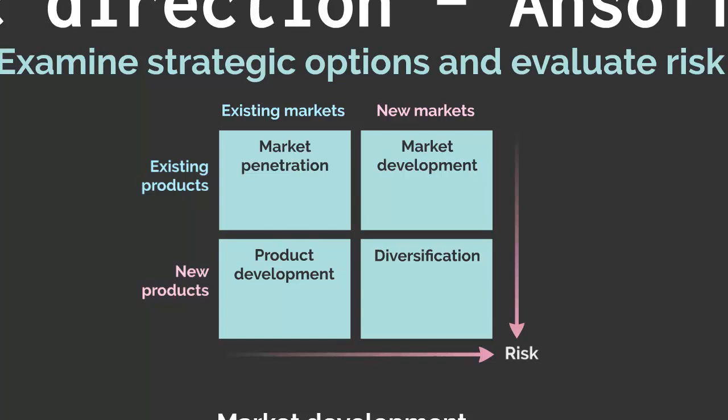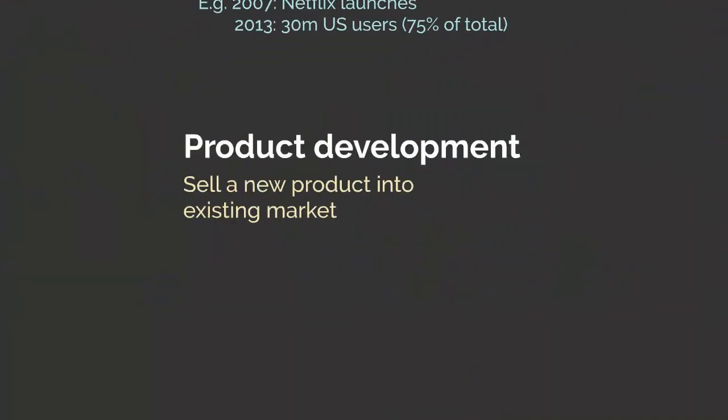Our third strategy is product development. As we can see on the matrix, this means offering a new product — or a modified product of some kind — to a market that the entity already operates in. The risk is higher than for market penetration because the product being developed is as yet untried, though understanding the market does help reduce that risk. Product development is about selling more products.